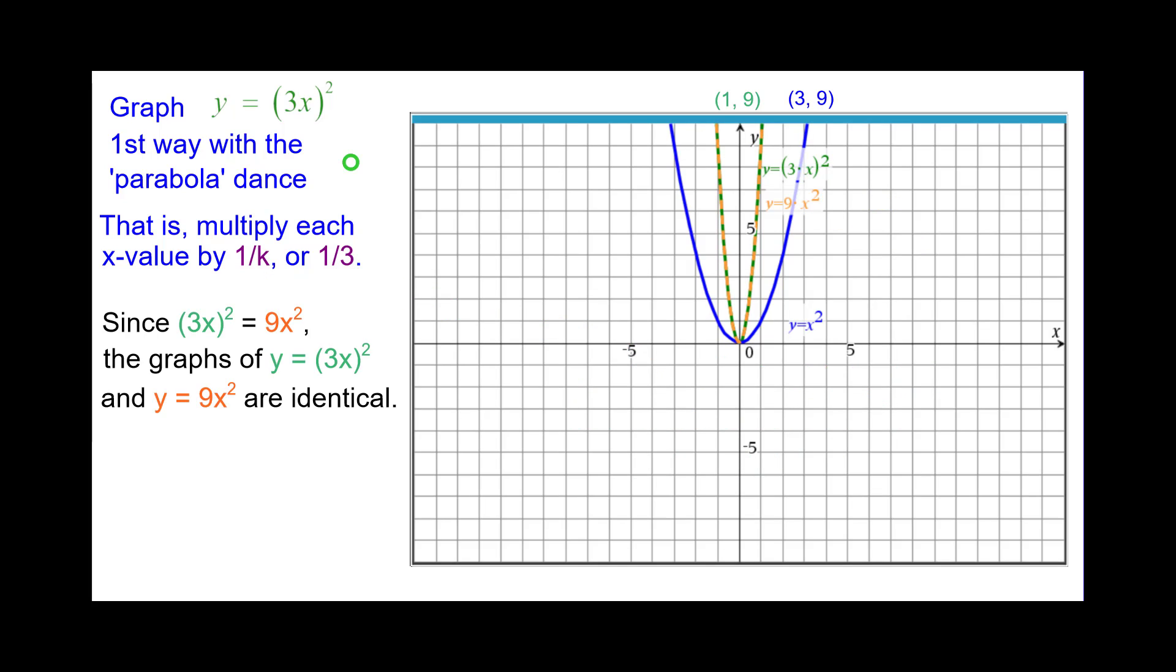Also, since the quantity 3x squared is equal to 9x squared, the graphs of y equals the quantity 3x squared and y equals 9x squared are identical.